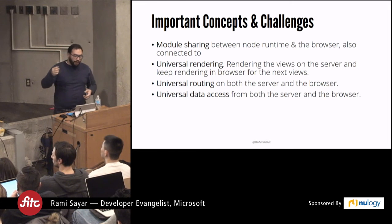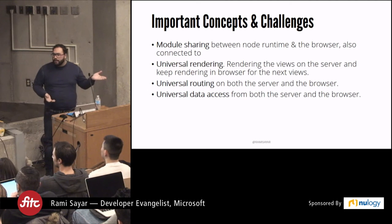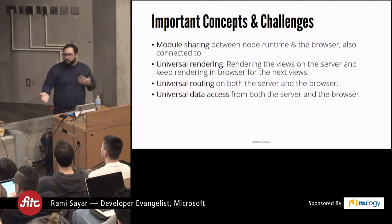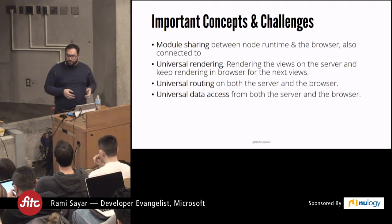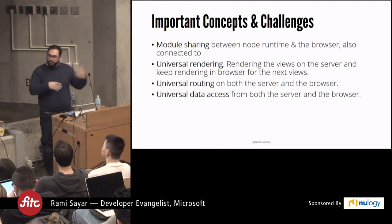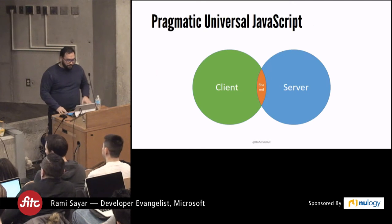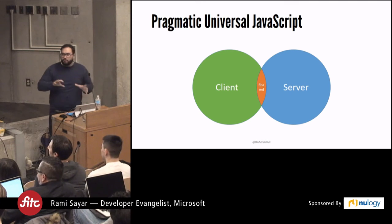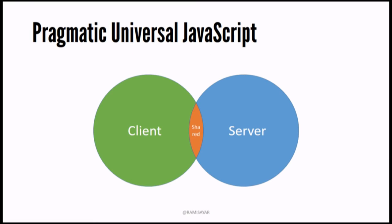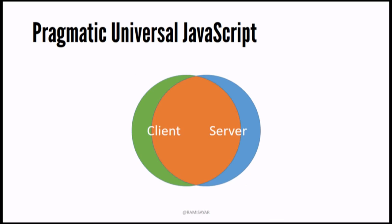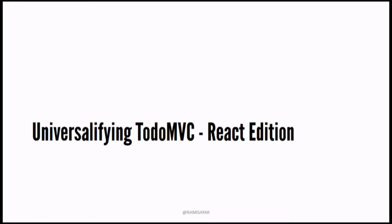Another concept is universal routing — how does routing work on the back end as it does on the front end? If you're doing hash routing, does that make sense when your web server might lose parts of the URL? And then there's universal data access from both the server and browser. Right now you probably have a separate server-side application and a completely different client application, maybe with a small sliver of shared code. What we're trying to get to is where most of the code is roughly the same.